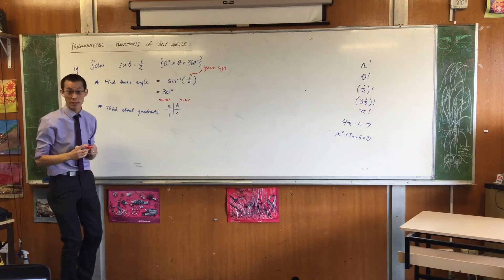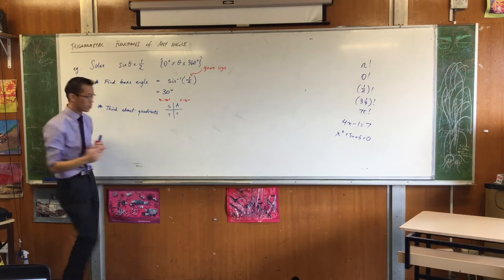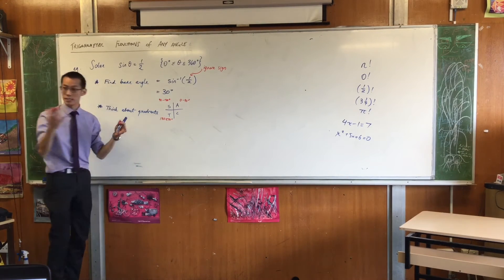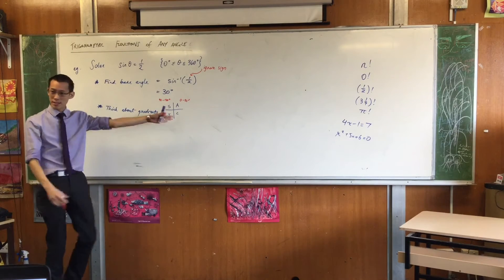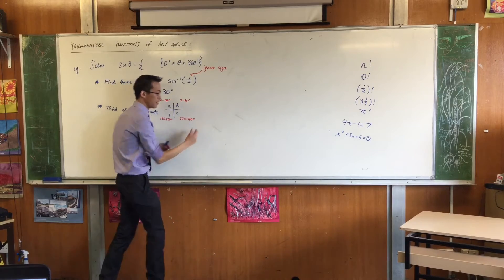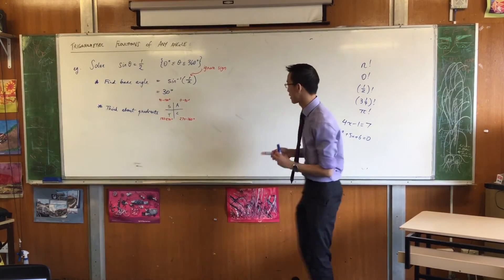What's the third quadrant? What range of angles do I get? 180 to 270. And in this quadrant, only tan is positive. And then lastly 270 to 360, cosine is positive, the other two are negative. Okay.